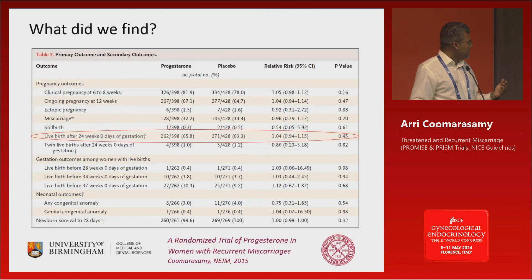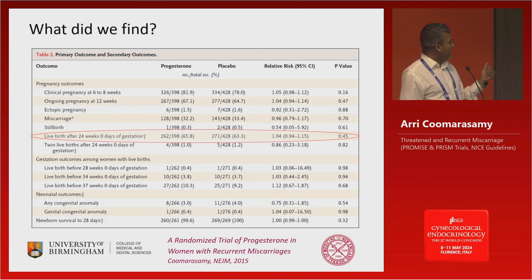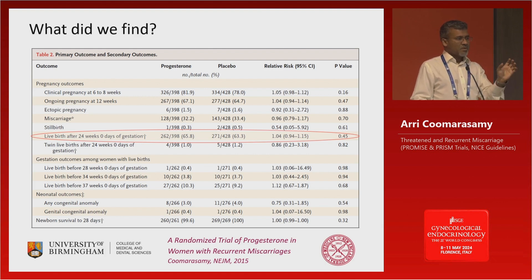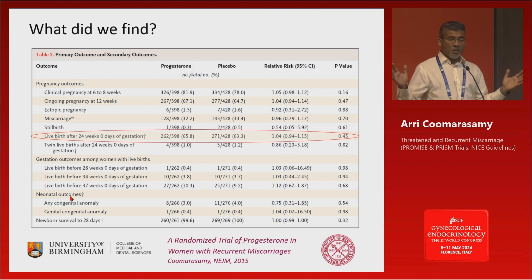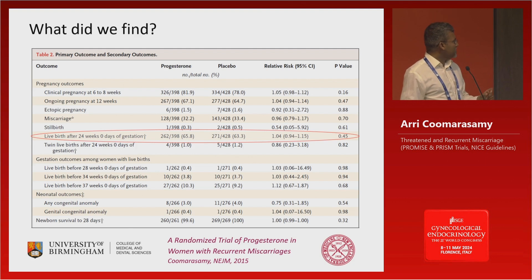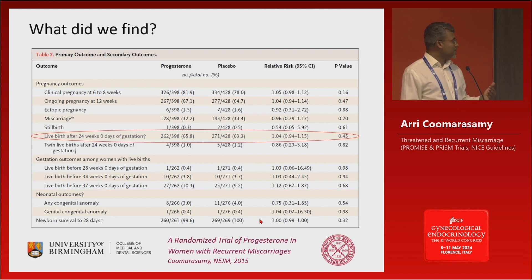The live birth rate was 65.8% with progesterone, but with placebo it was 63.3% — so 2.5% higher with progesterone. Remember, with PRISM it was 3%. No treatment in the context of miscarriage can give you a 10% or 20% uplift in live birth, because there are many causes for miscarriages and progesterone can only target a particular cause. So this was 2.5%. But if you look at the associated p-value, there isn't much statistical confidence, so this was published as a negative study.